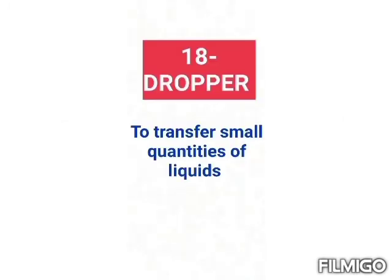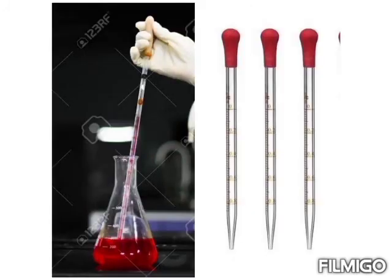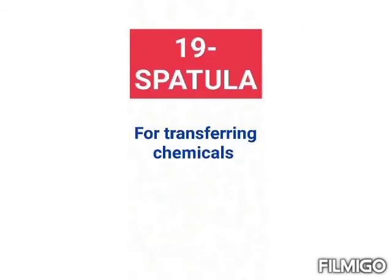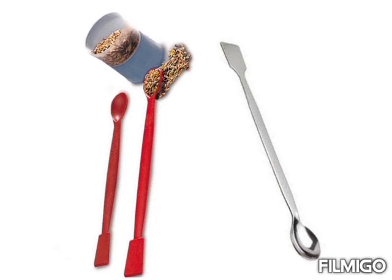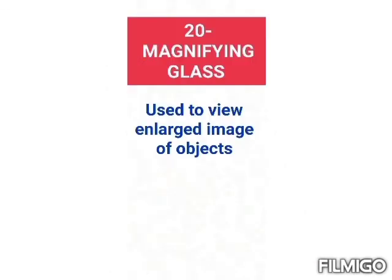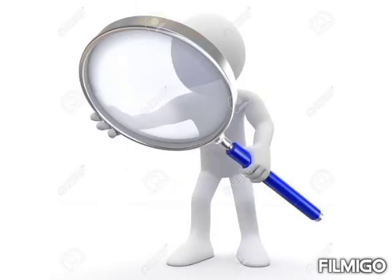Next is the dropper, which is used to transfer small quantities of liquids. Next is the spatula, which is used to transfer chemicals in powder or solid form. The last one is the magnifying glass, which is used to view an enlarged view of images. Thank you all, go through it.